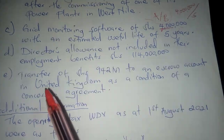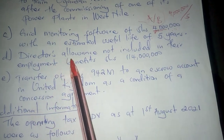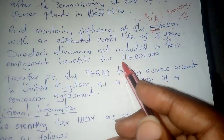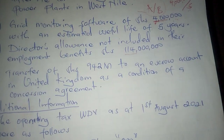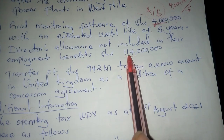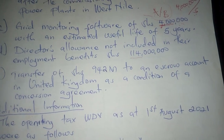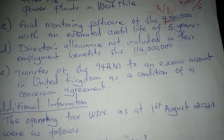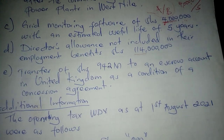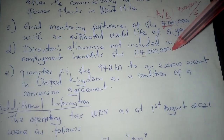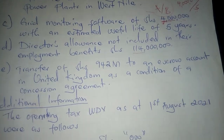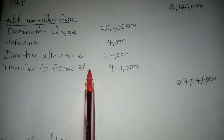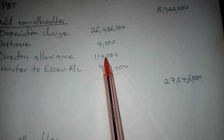Another item included in administration expenses: director's allowances not included in their employment benefits — 114 million. Since it was not taxed in employment income, it must be taxed in business income. It becomes non-allowable, so we come here under non-allowables and write 'director's allowances' at 114 million.